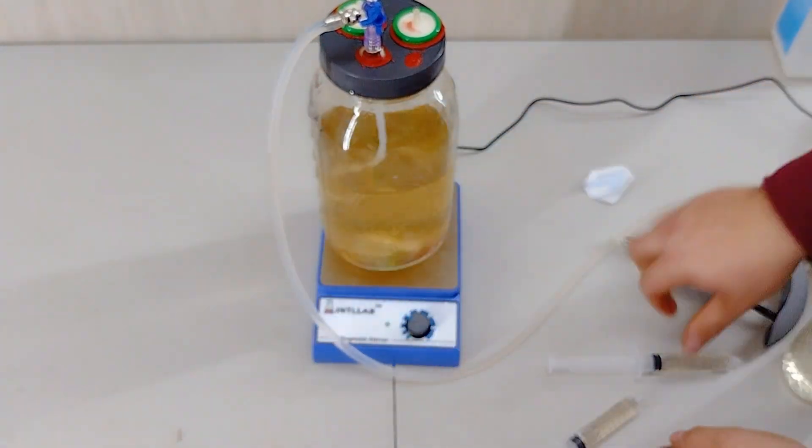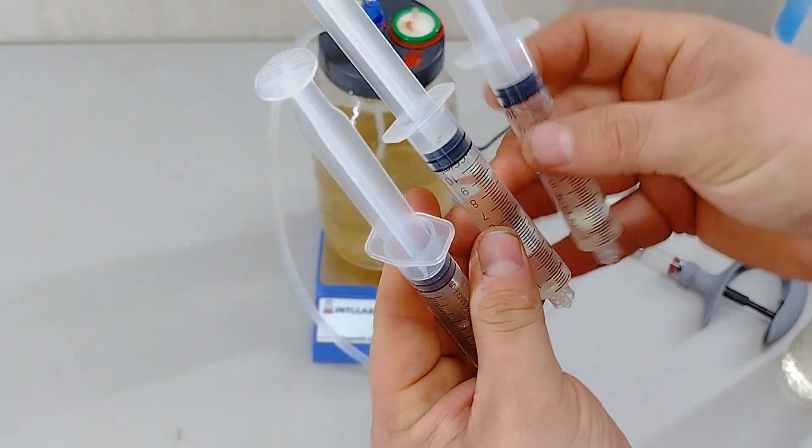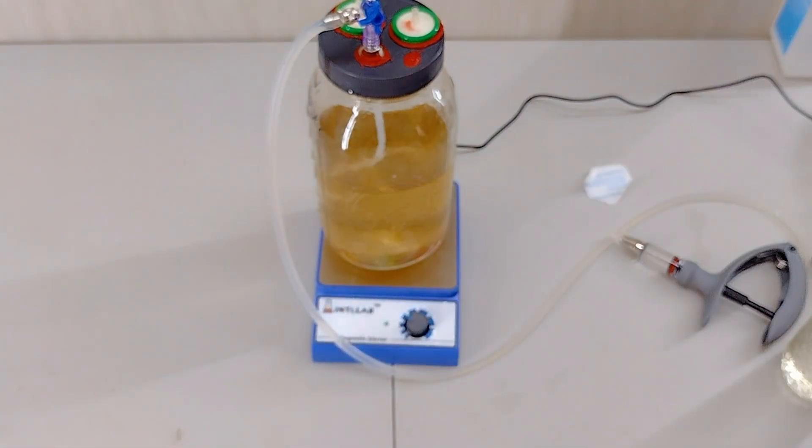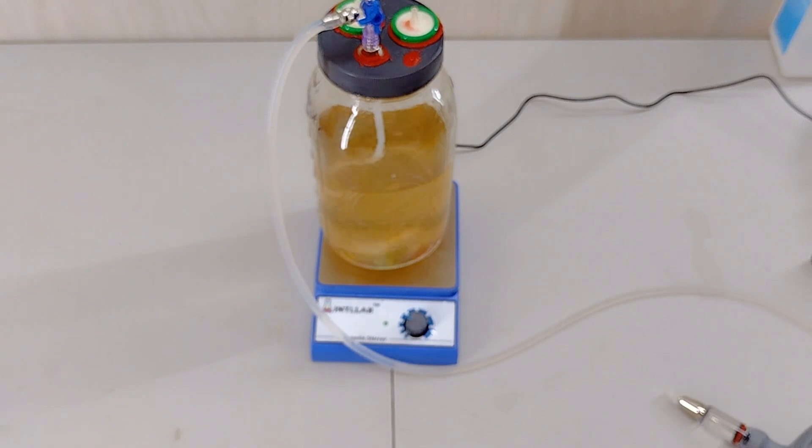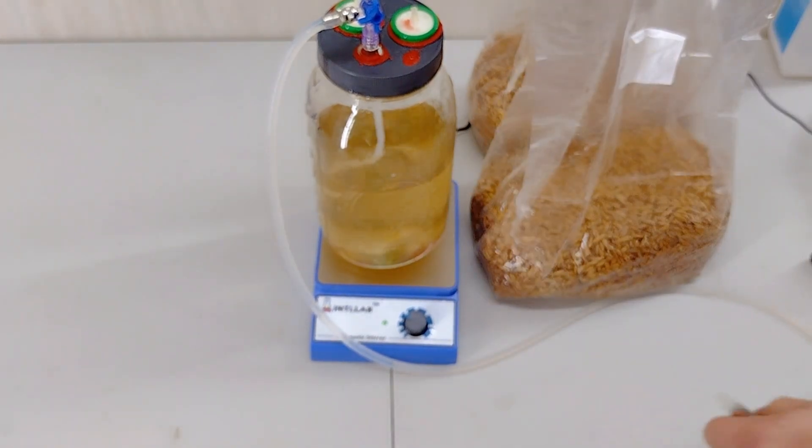The only thing you would need is some sterile caps, and you could either fresh-cook those, or I like to have mine in isopropyl alcohol. So, now that you saw how to fill syringes, now we can move on to doing grain bags.